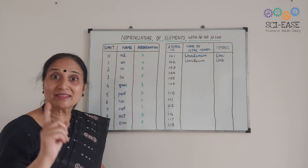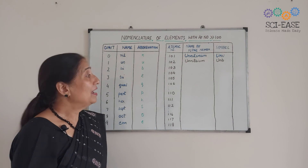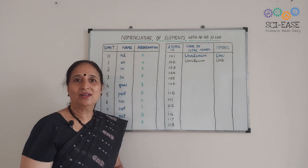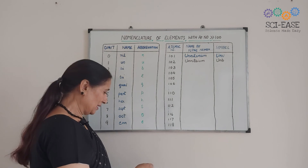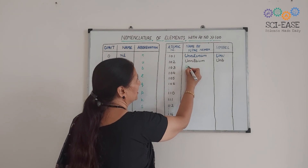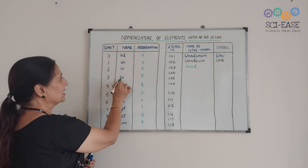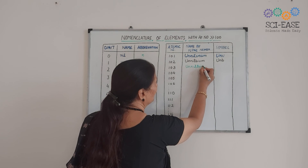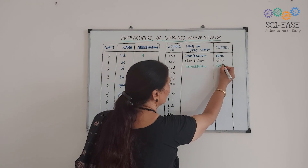Now for element 103: the atomic number is given and you write the IUPAC name and symbol. Digits are 1, 0, 3 — giving 'un', 'nil', 'tri', with the suffix '-ium': 'Unniltrium'. Its symbol is U, n, t — 'Unt'.